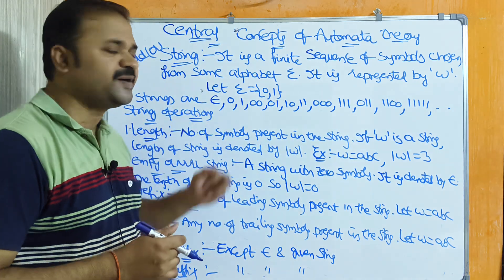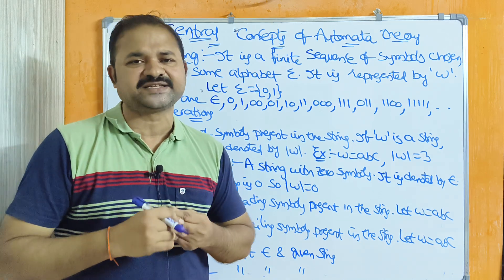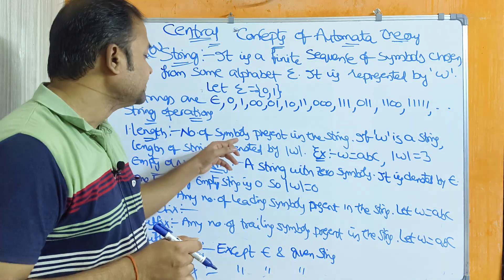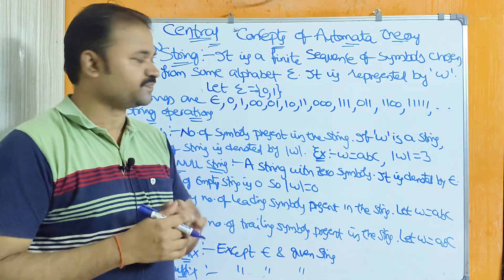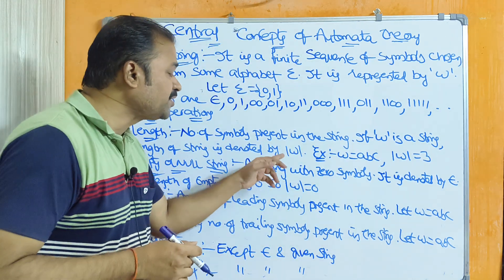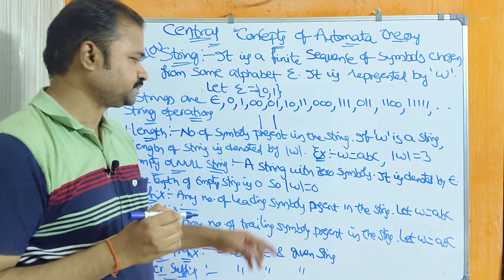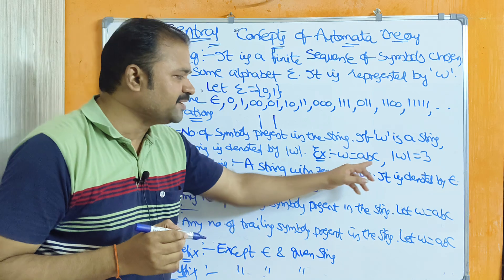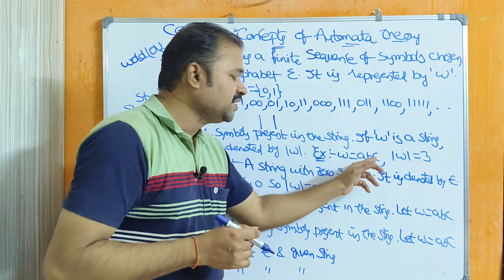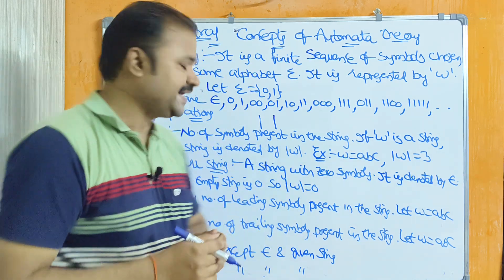Now let us see the string operations. Totally we can perform 11 operations on the string. The first operation is length. Length means the number of symbols present in the string. If w is a string then the length of the string is denoted by |w|. For example, let w equal to abc, then the length of the string |w| equals 3, because w totally contains three symbols.